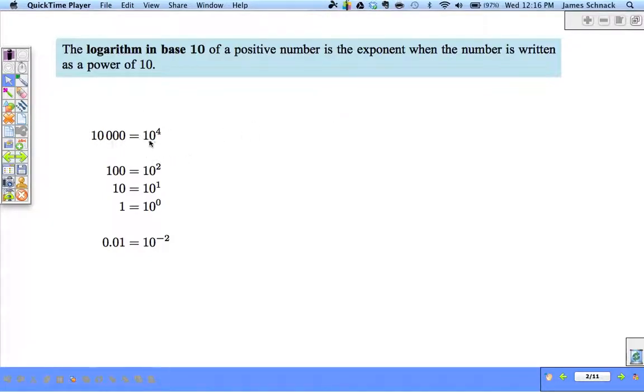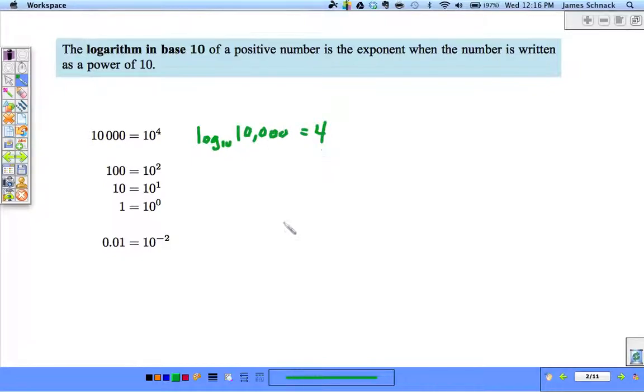So here we have 10,000 that's equal to 10 to the 4th. So what I could say is that the log base 10 of 10,000 is equal to 4. The log in base 10 of a positive number is the exponent when the number is written as a power of 10. So logarithms are exponents. Log base 10 of 100 is equal to 2, the exponent.